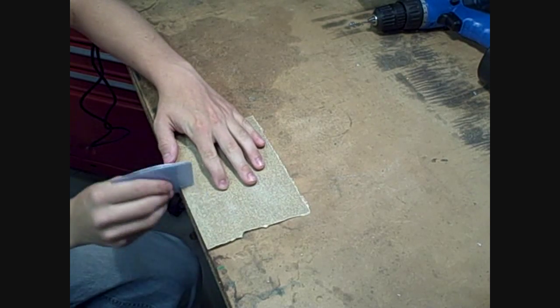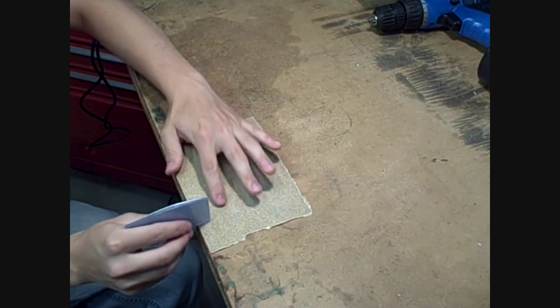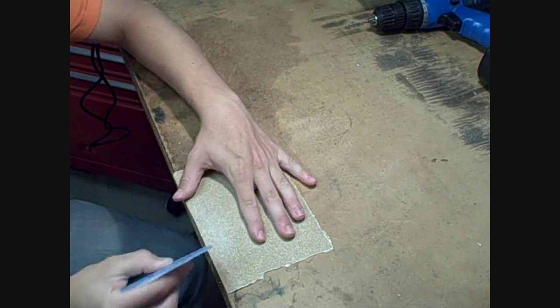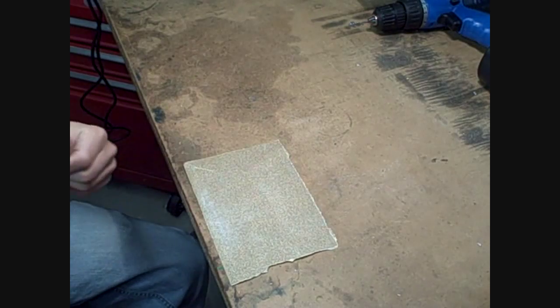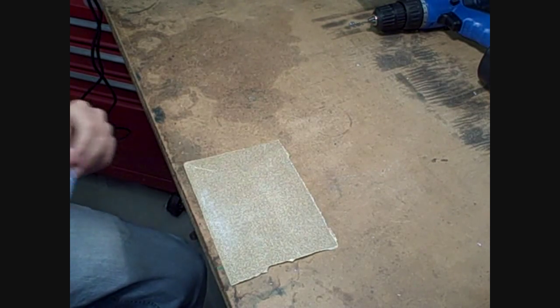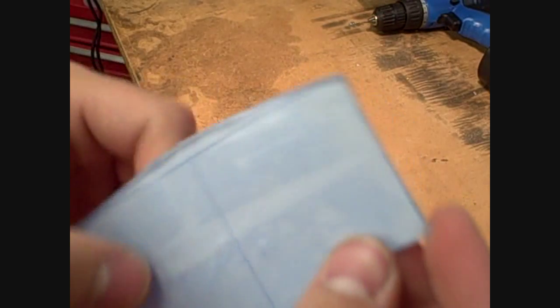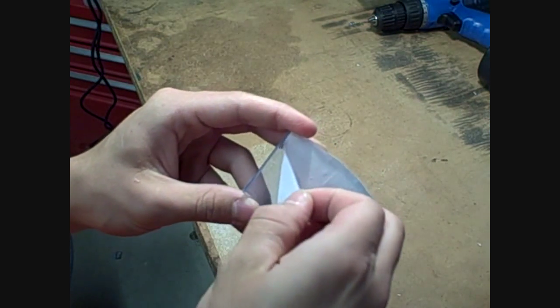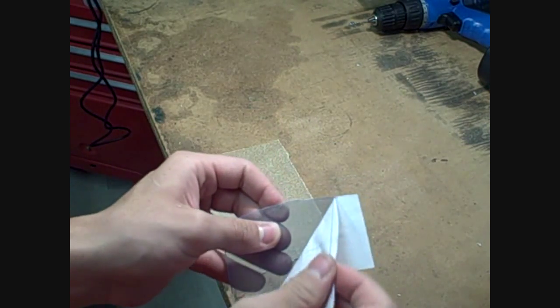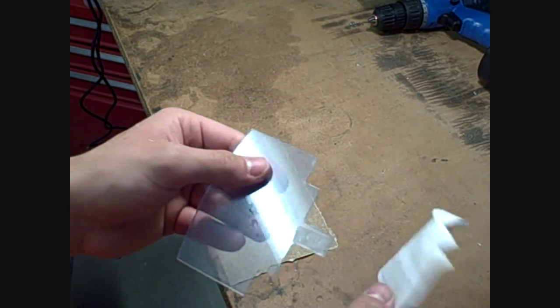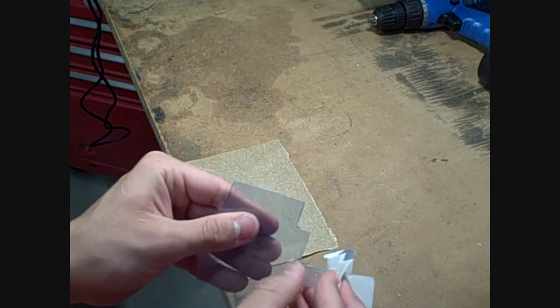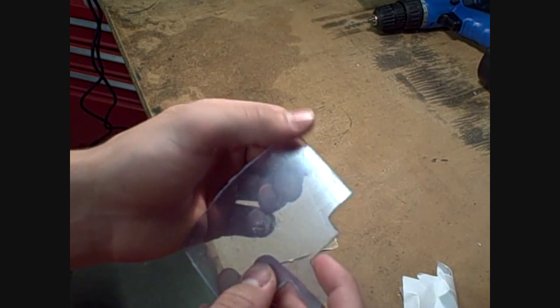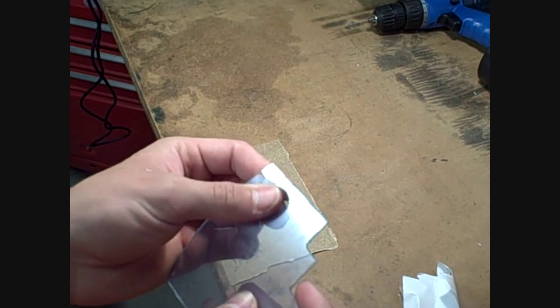Rub it against like so, that always smooths it out nice. Now all our edges are nice and smooth, so at this point you can take your template off. Make sure to get all your double side sticky tape off, and if your material has a protective backing like mine does, you can go ahead and peel that off now.